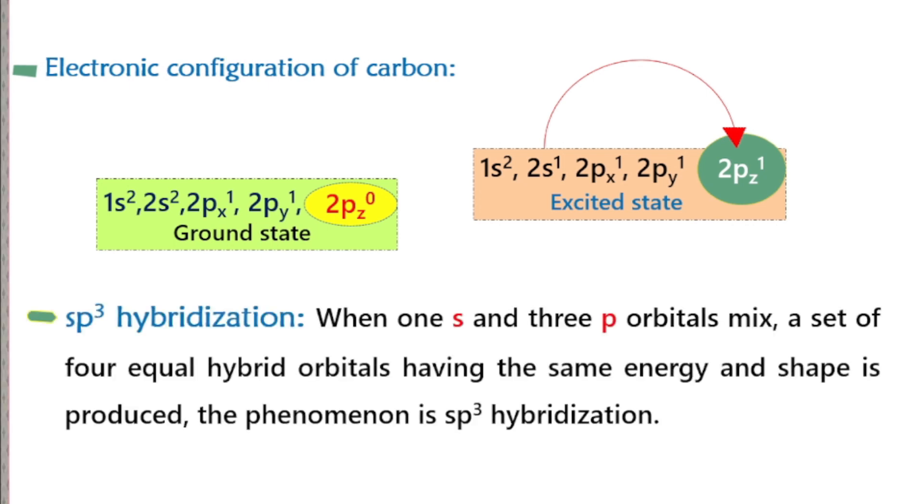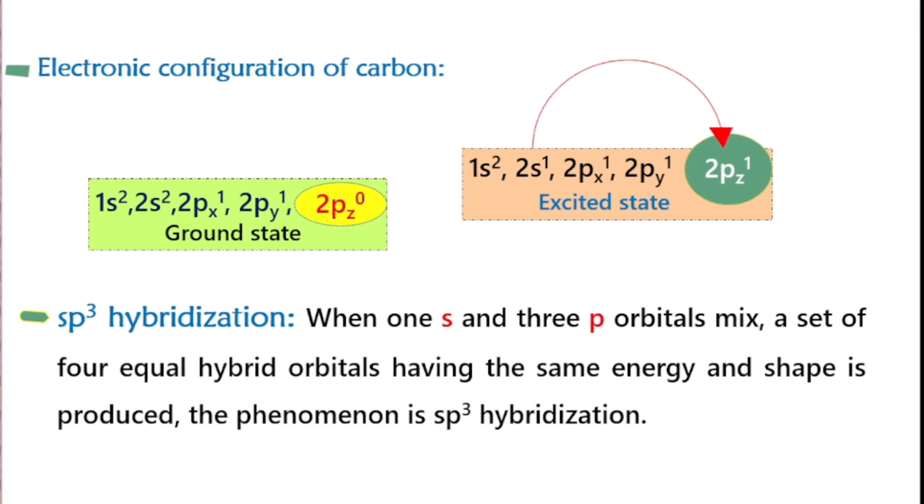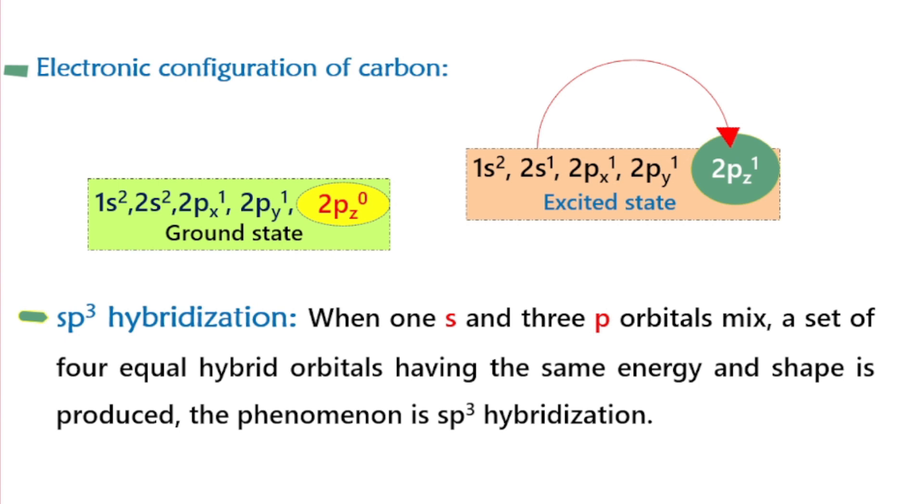sp3 hybridization: when 1 s and 3 p orbitals mix, a set of 4 equal hybrid orbitals having the same energy and shape is produced. The phenomenon is sp3 hybridization. In sp3 hybridization, 1 s and 3 p orbitals intermix. As a result, we get four hybrid orbitals which have the same energy and shape. This is called sp3 hybridization.